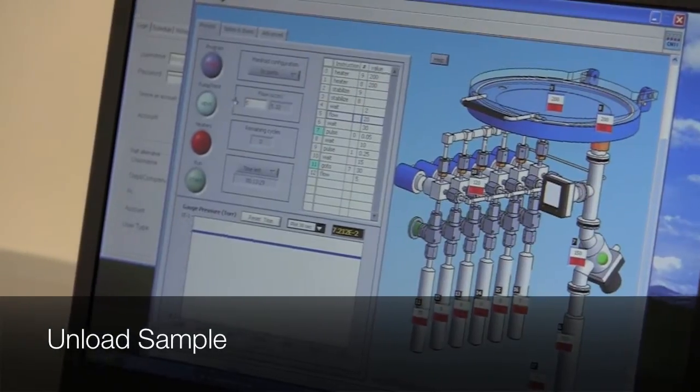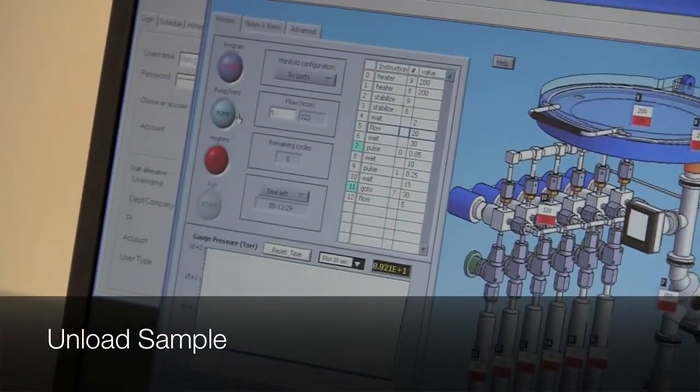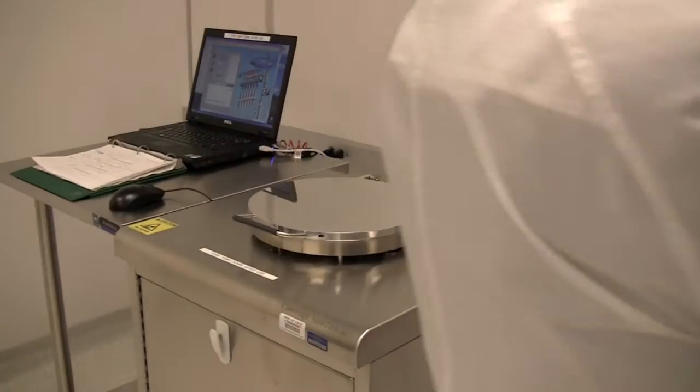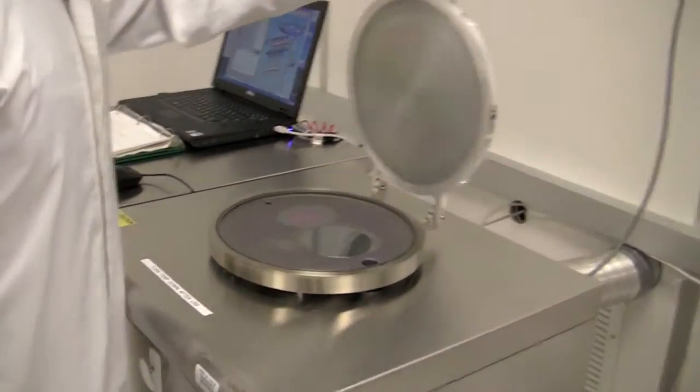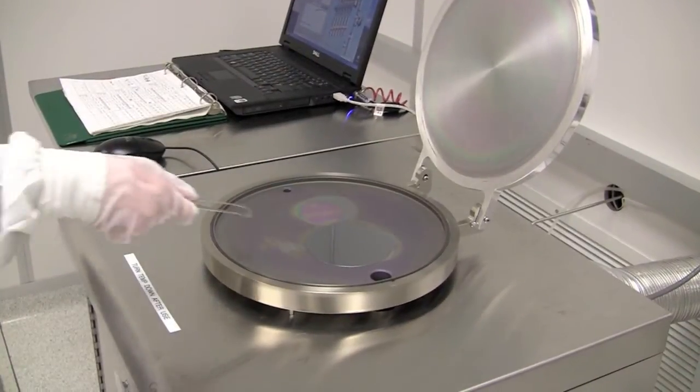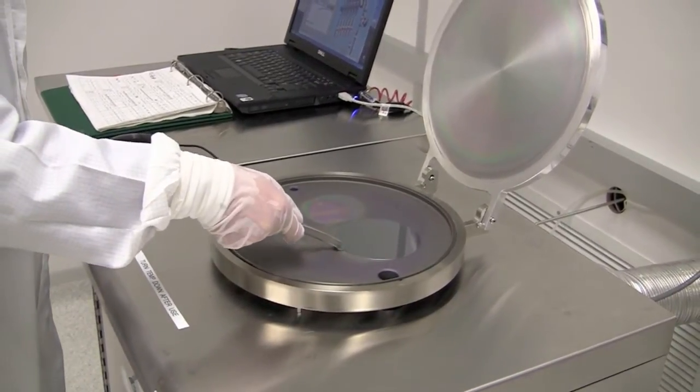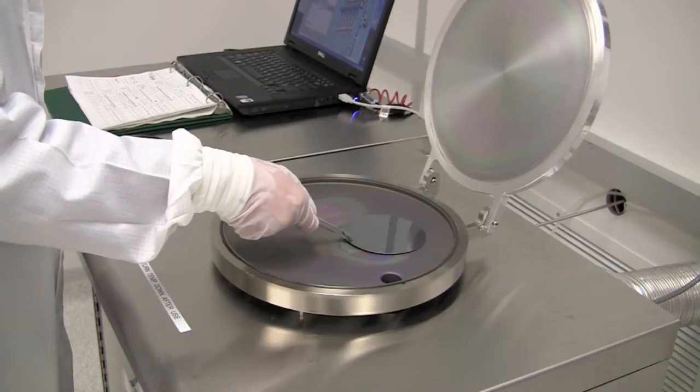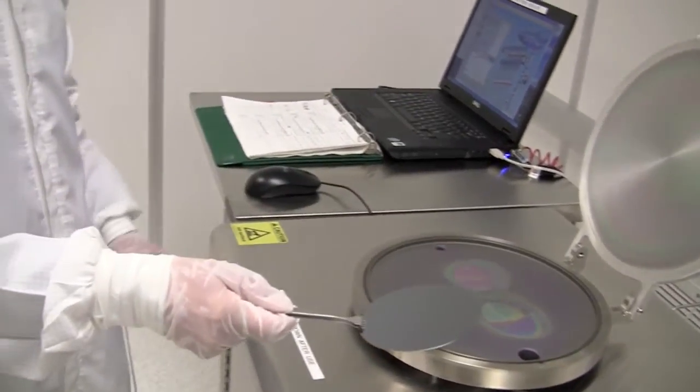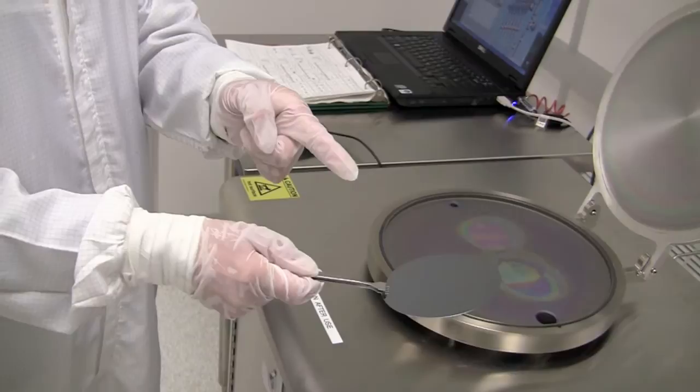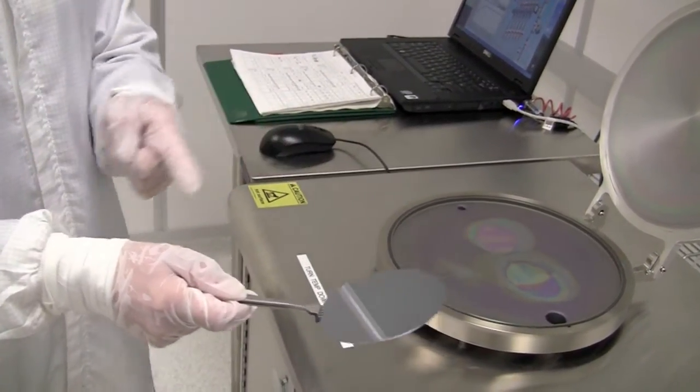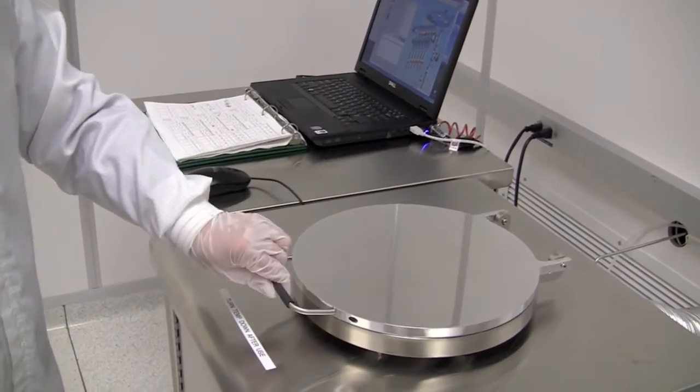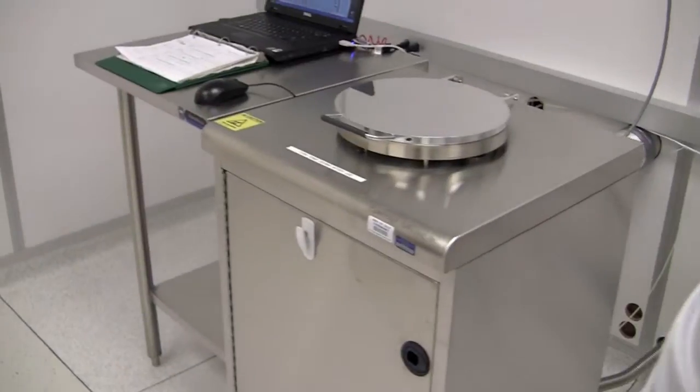Once done, click the vent button to vent the chamber. Put aside the metal shield. Open the lid. Very carefully remove the wafer with a clean metal tweezer. Remember, it is very hot, 200 degrees C. Make sure you put it in a clean safe place. Close the lid. Put back the metal shield.